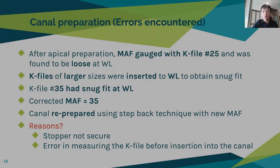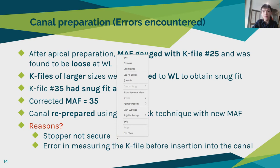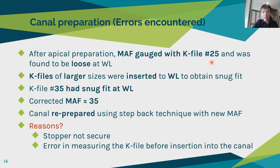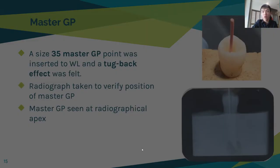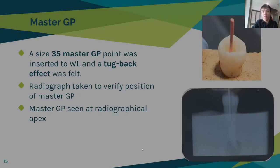An issue encountered during canal preparation was that the MAF was gauged with size 25 after doing the MBFT technique but was found to be loose at the working length. So K-files of larger sizes were inserted to working length to obtain a snug fit. A snug fit was obtained at K-file size 35 at working length, so the corrected MAF was set at 35 and the canal was re-prepared using step-back technique. The reason this occurred may be a loose stopper or error in measuring the K-file before insertion, possibly causing the apical portion to be over-prepared.